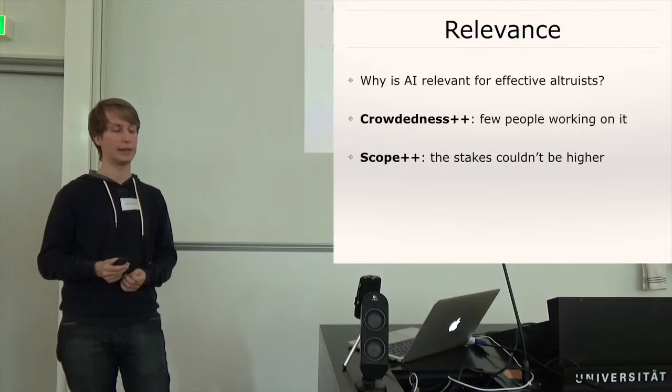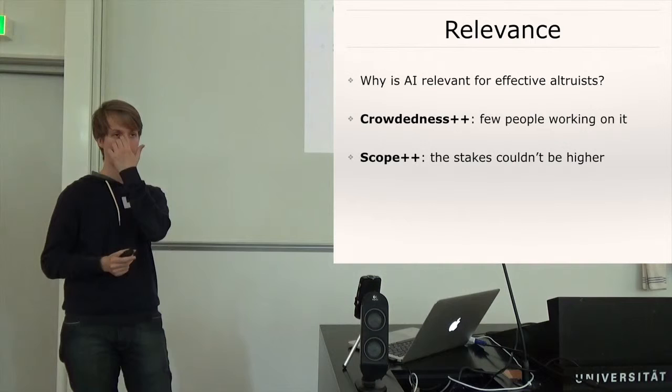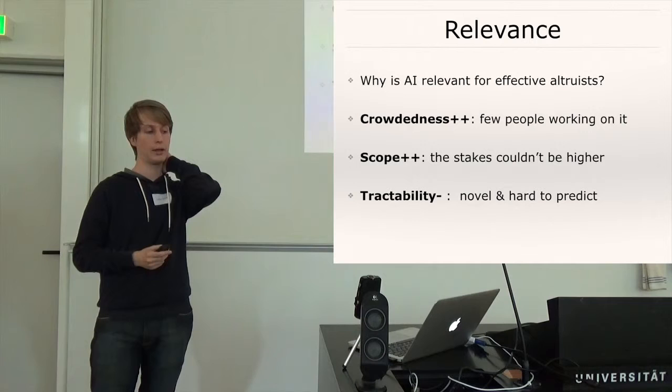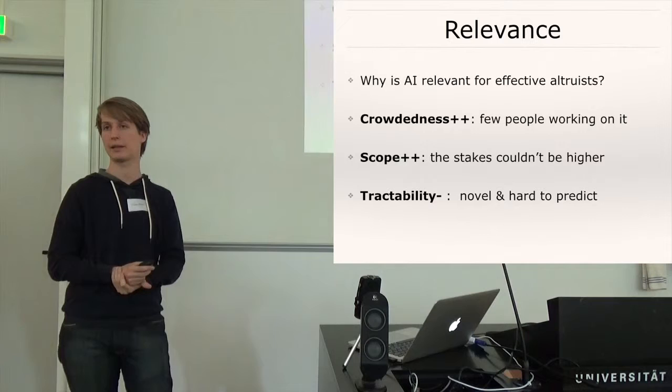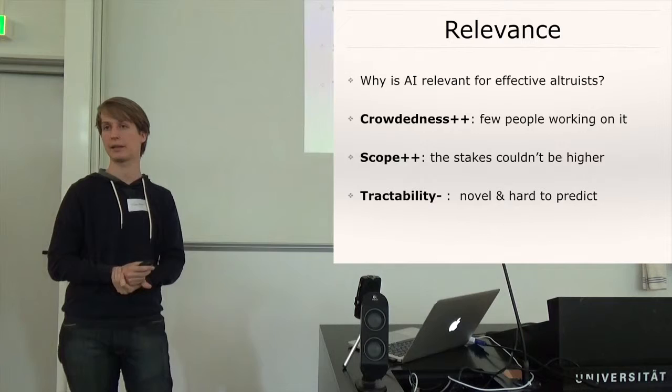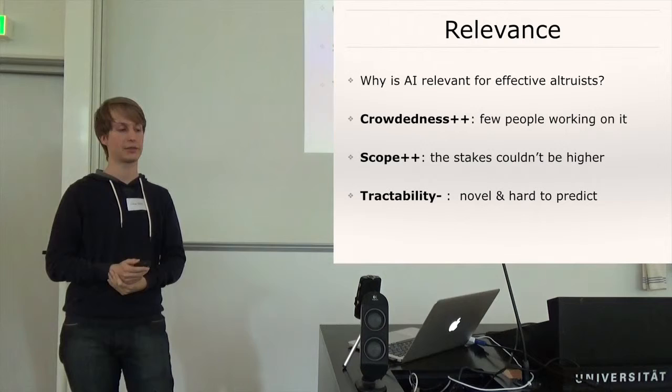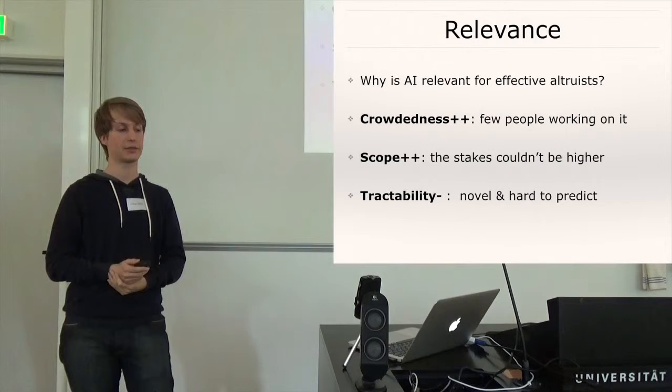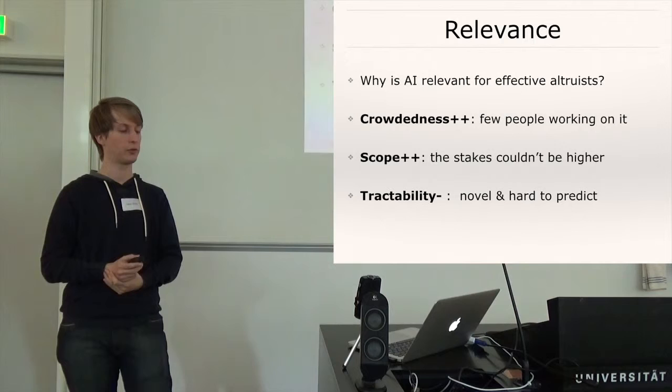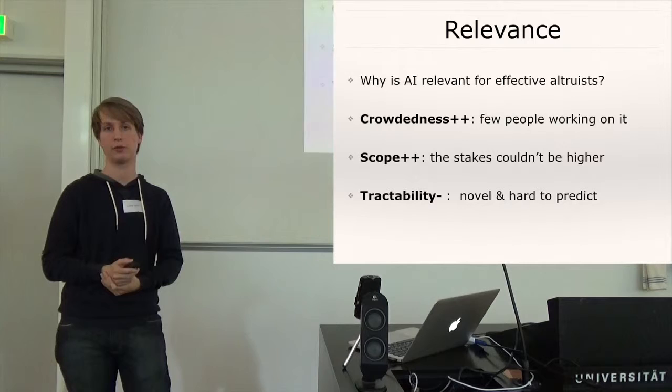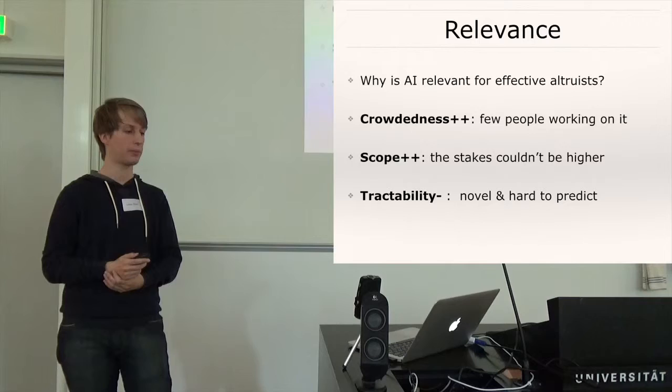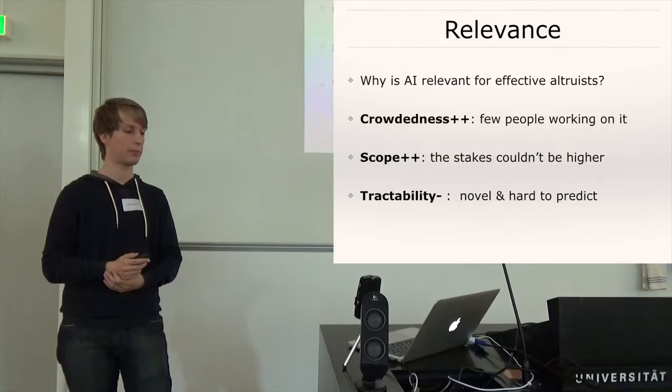Then scope. Arguably the stakes couldn't be higher because AI is the last stage of technology. Once you have AI you can use it to invent all sorts of other technologies and this just makes this a very important lever that you would want to influence if you want to influence the long-term future of life on earth. And finally tractability. Now this is where things are less clear. Critics argue that AI is too difficult to influence because it's a novel topic it's hard to predict there are no case studies so far how we would affect it positively.